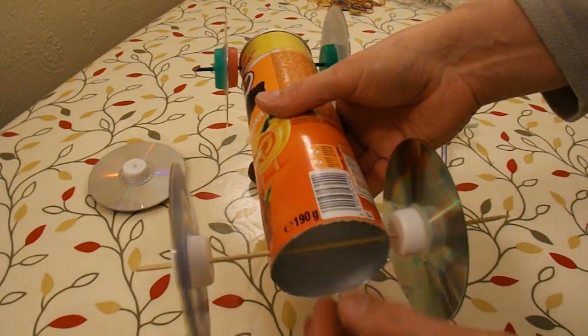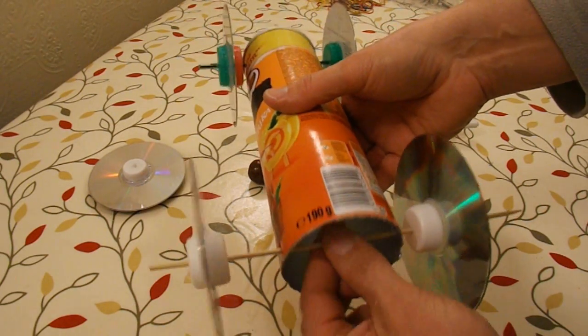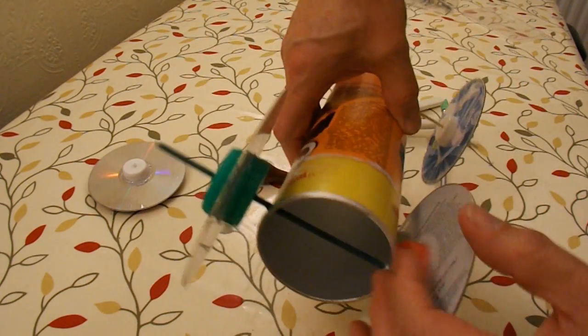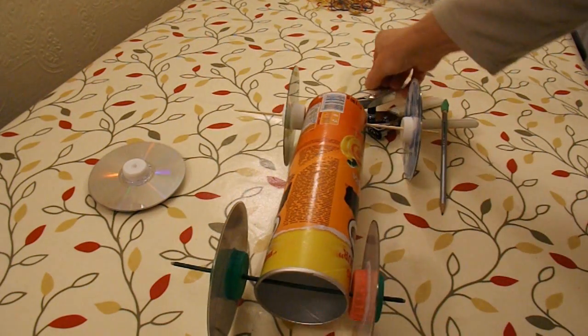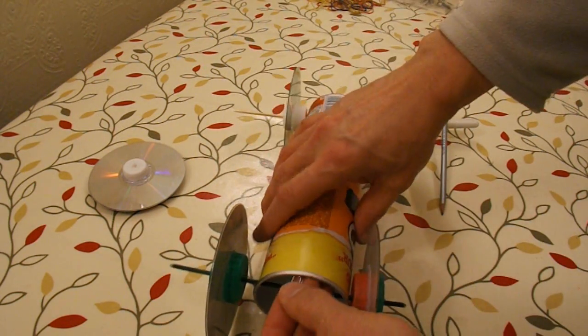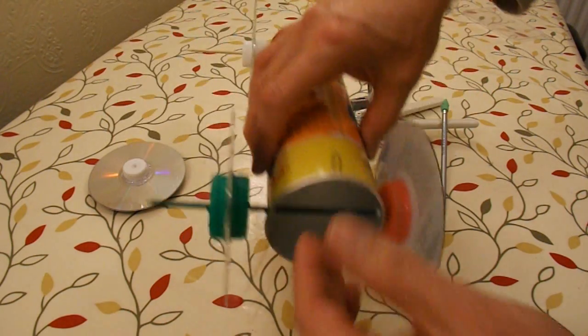What we need to do now is attach the rubber band to one of them. And at the other end I'm going to attach it to the top of the tube. With a paper clip. Just like that.